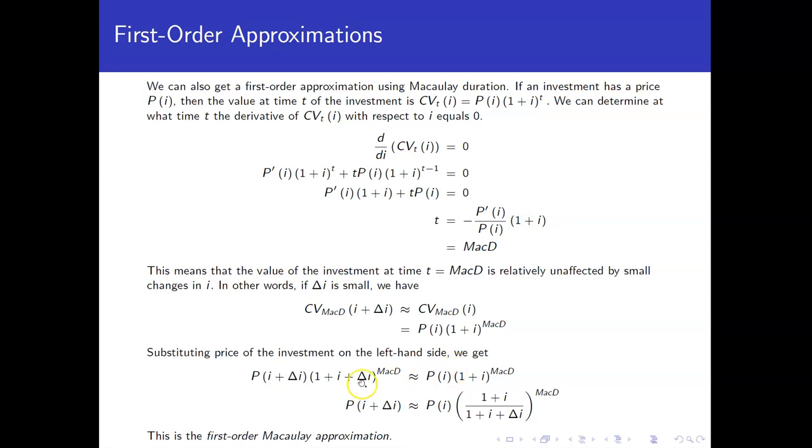All right, so now let's just substitute the price of the investment on the left-hand side. This is just again using the current value formula that we had above. And then solve for the price at that interest rate. You get the price at the interest rate, the starting interest rate, not the changed one, and then times this quotient raised to the Macaulay duration. So this is what's referred to as the first order Macaulay approximation of what happens to the price for a small interest rate change.